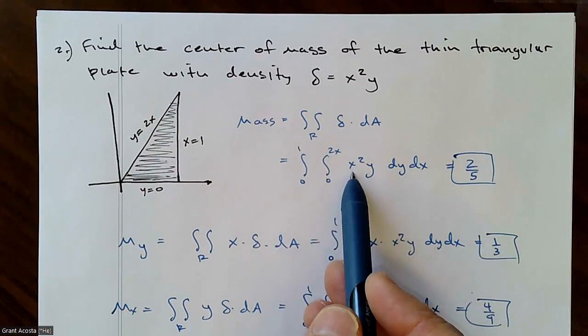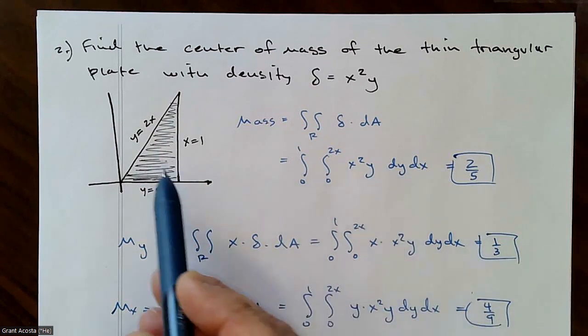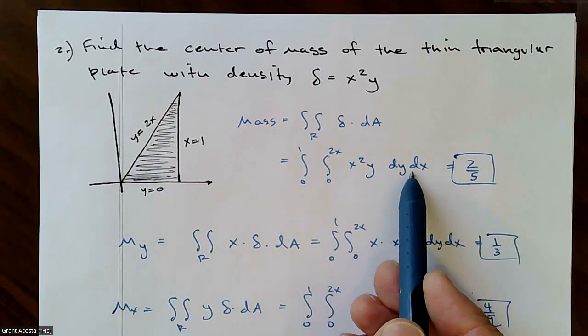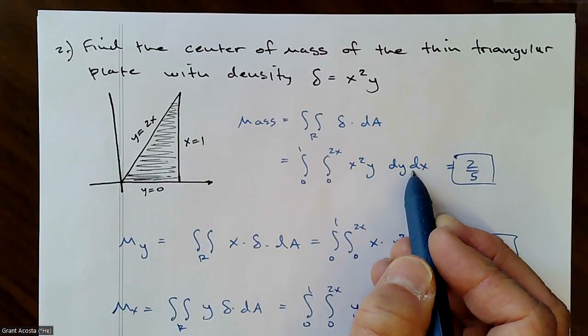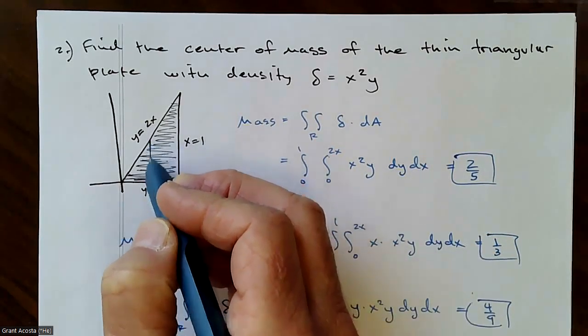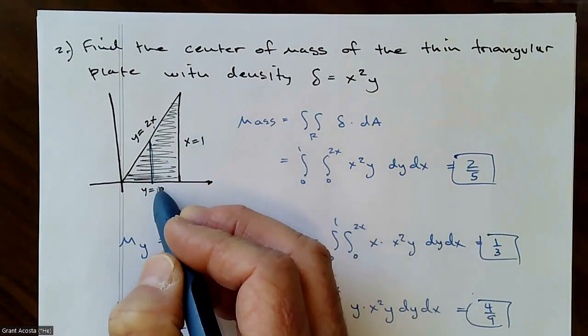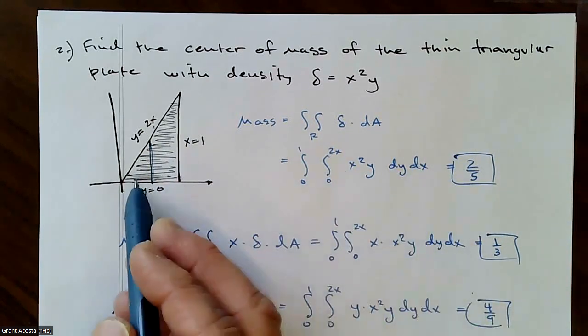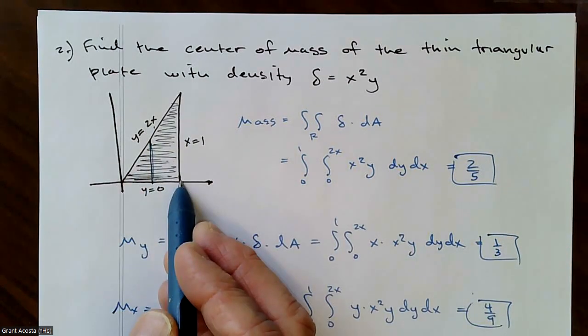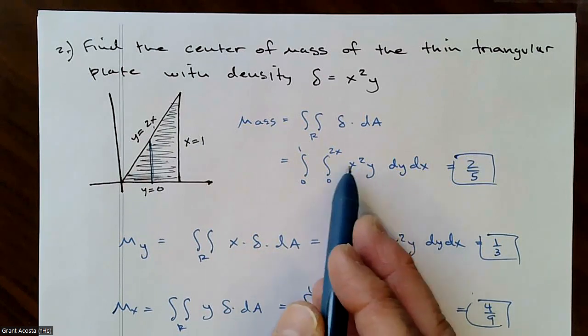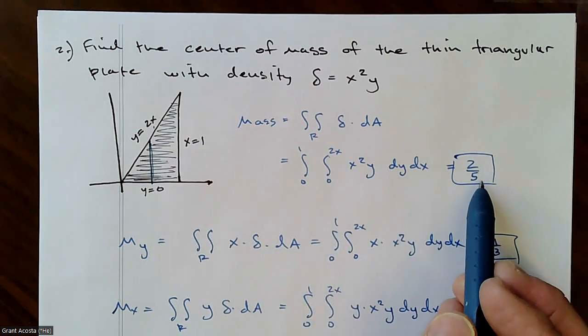So I've got my density. And then I'm going to describe this. I'm choosing dy dx. That means for any given x value, what does y vary from? Well, it varies from 2x to 0. And that's true as long as x is between 0 and 1. And if you work that out, hopefully you'll get two-fifths.